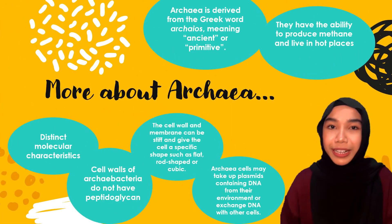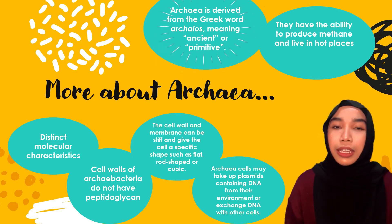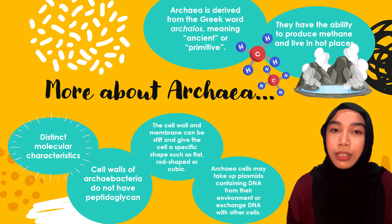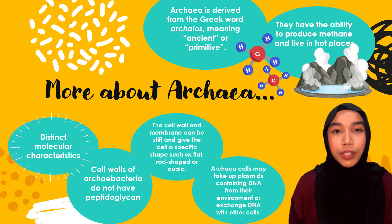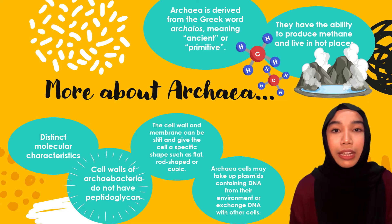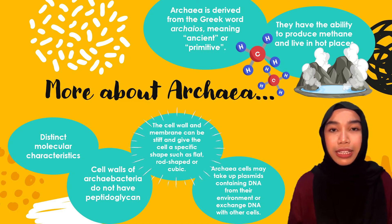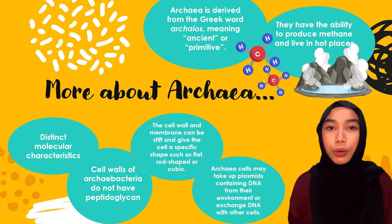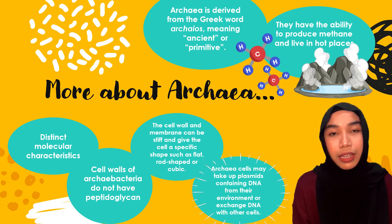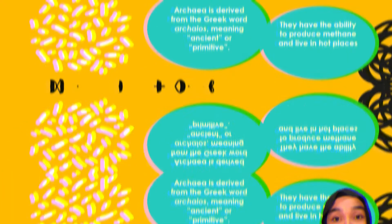The word Archaea is derived from the Greek word 'Archaeos', meaning ancient or primitive. Archaea can produce methane and live in very hot places like hot springs. They have very distinct molecular characteristics that are very different from bacteria and eukaryotes, and even their cell walls don't have peptidoglycans found in bacterial cell walls. Their cell wall and membrane are also stiff, giving them shapes like rod or cubic. Sometimes they exchange or take up plasmids containing DNA from their environment or with other cells, enabling them to survive in extreme conditions.